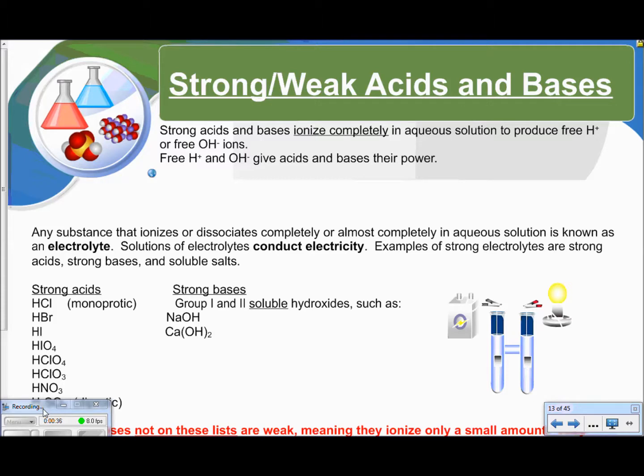First of all, I need you to understand the difference between strong and weak acids and bases. Strong acids and bases ionize completely in aqueous solution to produce H+ or free OH- ions, hydrogen ions or hydroxide ions, which give acids and bases their power. Any substance that ionizes or dissociates completely or almost completely in aqueous solution is known as an electrolyte. Solutions of electrolytes conduct electricity. Examples of strong electrolytes are strong acids, strong bases, and soluble salts.